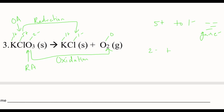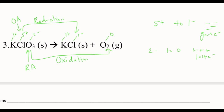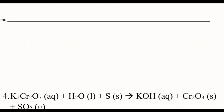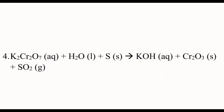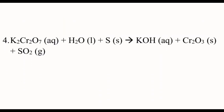You can tell it's going to be oxidation because if it's going from positive to more and more negative, it's gaining negatives. So that means that's reduction. All right, this next one is a little longer, a little more tricky.